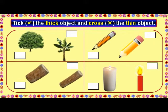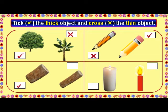Pick the thick object and cross the thin object. The mango tree is thick. The red pencil is thin. The yellow pencil is thick. This log is thick. This log is thin. This candle is thick. This candle is thin.